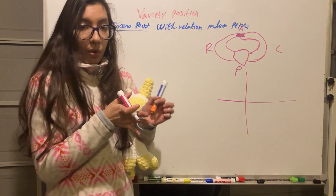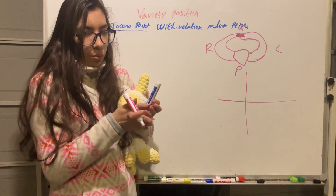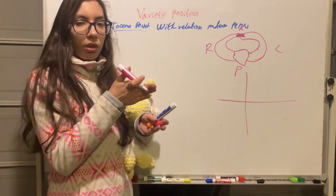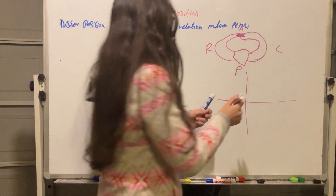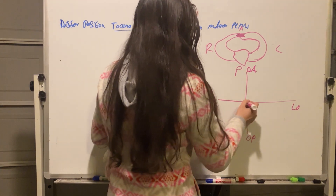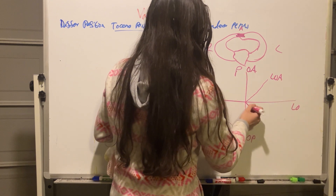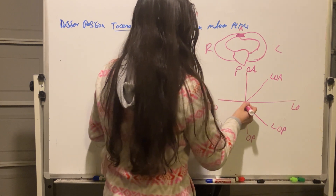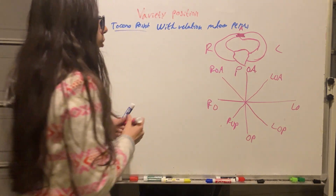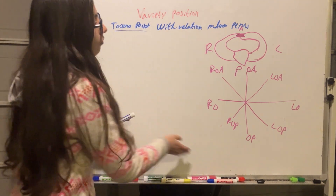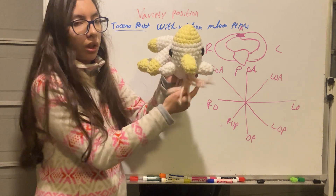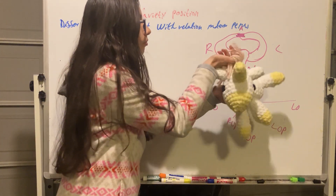This is talking about a maximally flexed neck — a vertex presentation where the tokenomic point is the occiput. So we can have occiput anterior, occiput posterior, left occiput, or right occiput. These are the variations of position of the tokenomic point relative to the maternal pelvis.